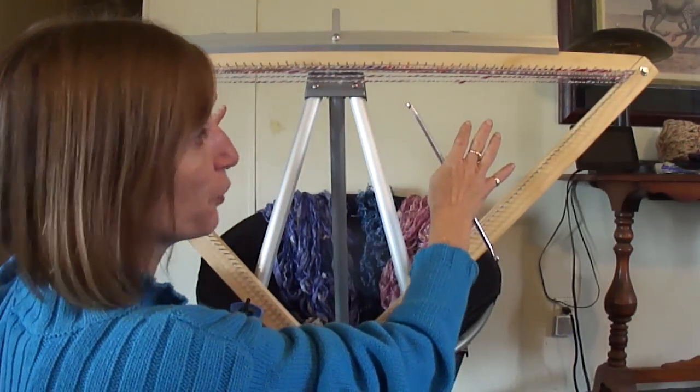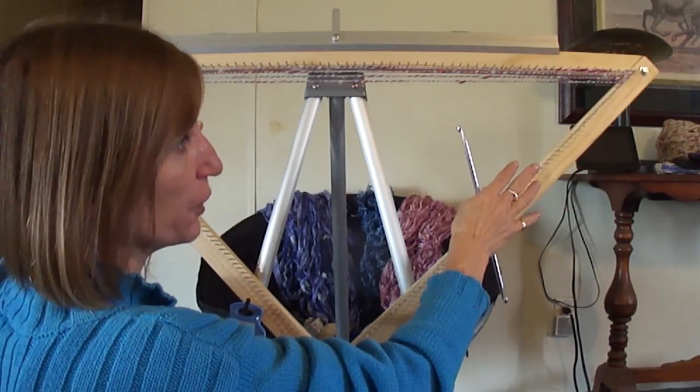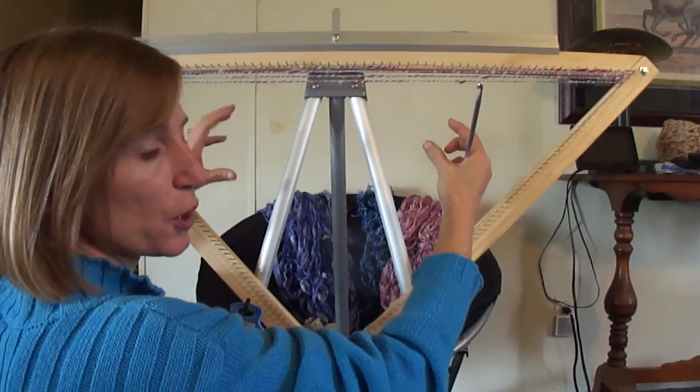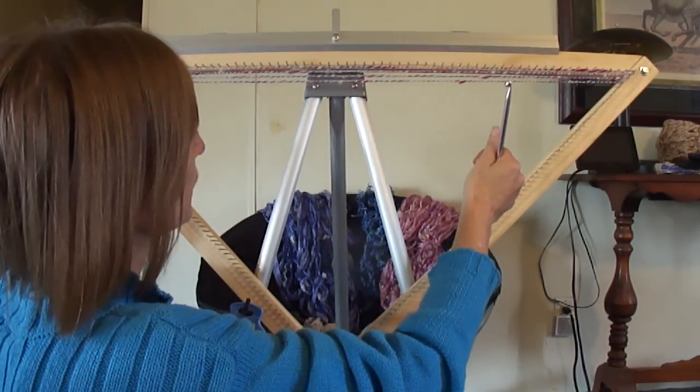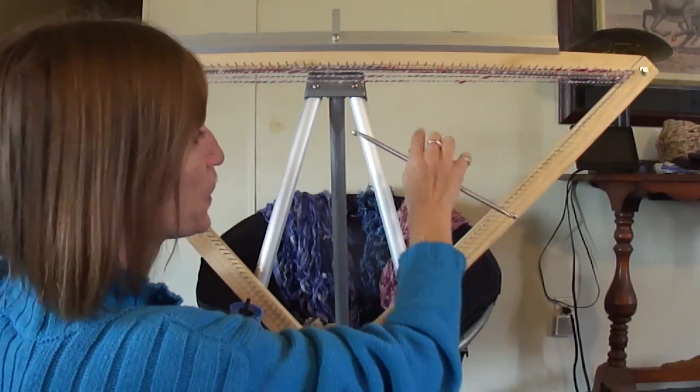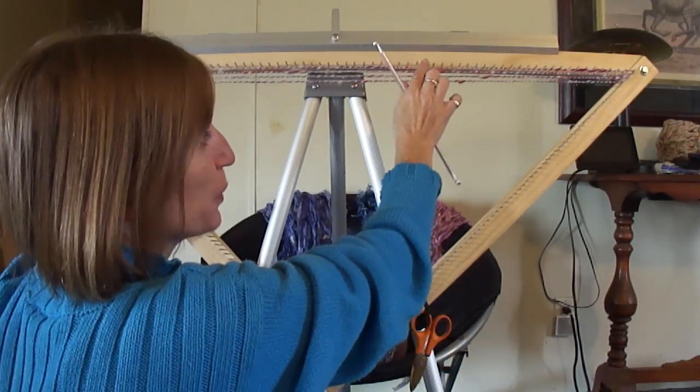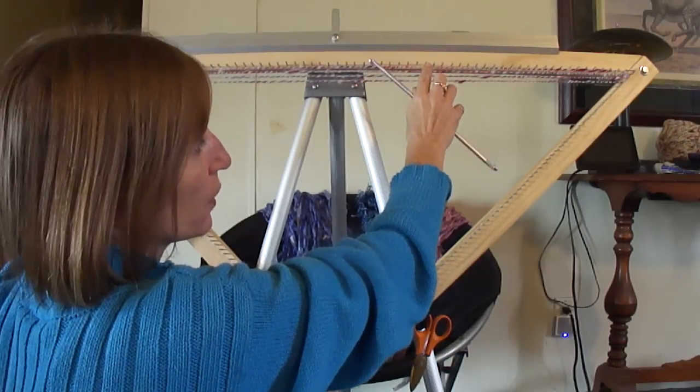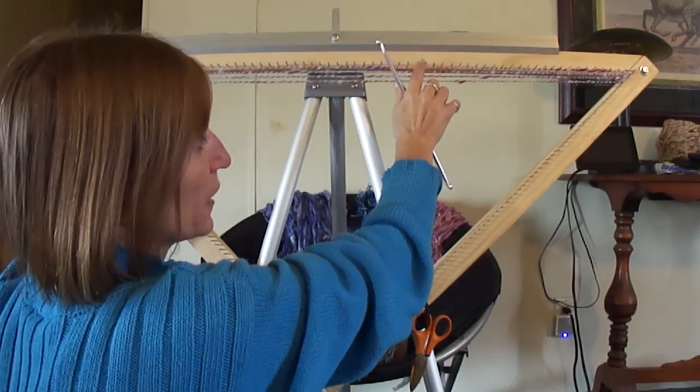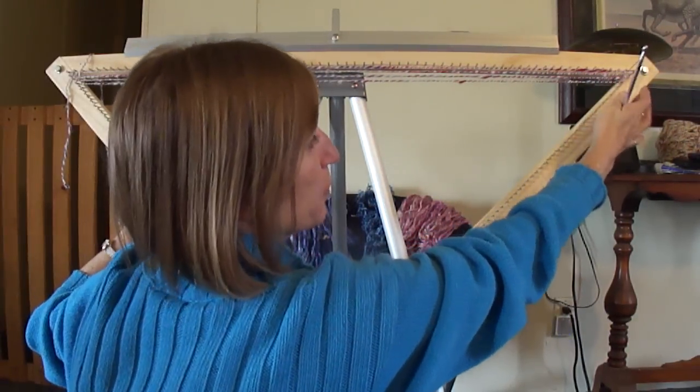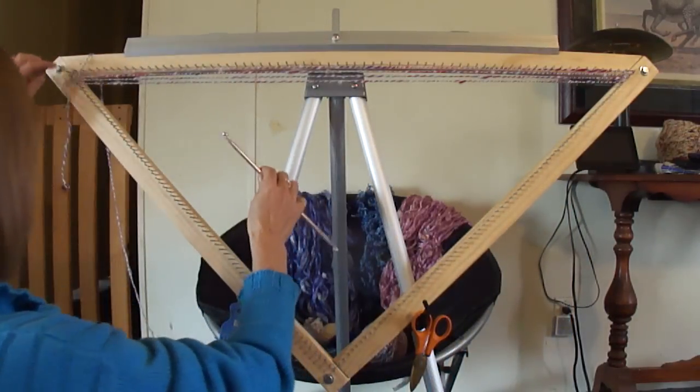When you add different textures of yarn, some of the fatter yarns are going to be taking up a little extra room. So you may need to skip a peg, or for really thin yarns, you may have to place two of these loops on one peg. I'll show you as we go.